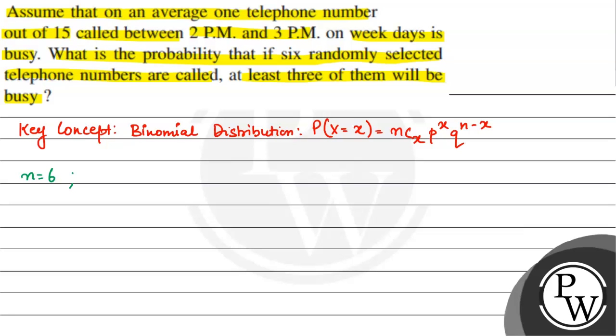So n equals 6. Probability of success p is 1 out of 15, that is 1 upon 15. And q is 1 minus p, so that is going to be 1 minus 1 upon 15, which is 14 upon 15.